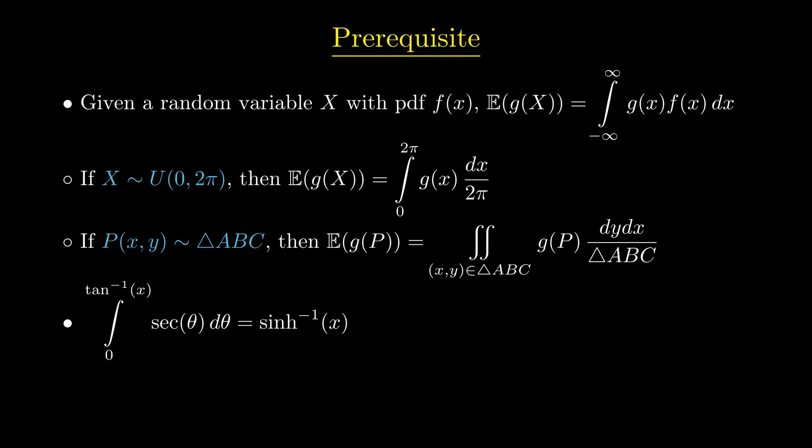Second, integral of a secant function from 0 to tan inverse of m equals the inverse hyperbolic sine of m. Finally, the law of total expectation. That is, if we know the distribution of x and the expected value of a random variable y for a given value of x, then we can find the expected value of y using the same formula above.